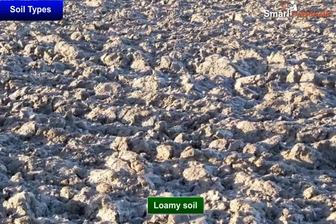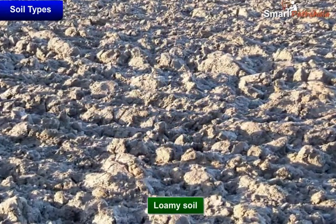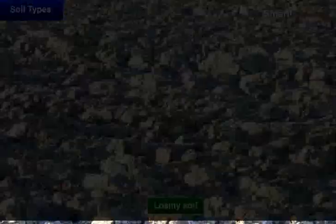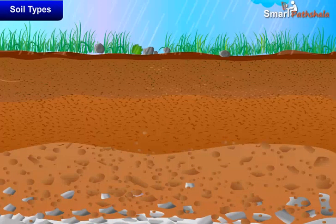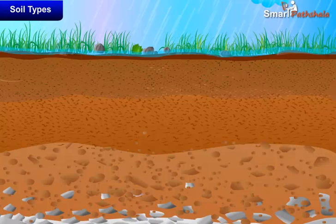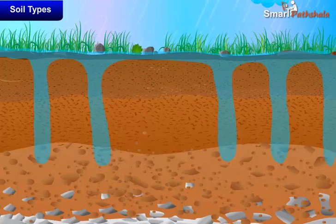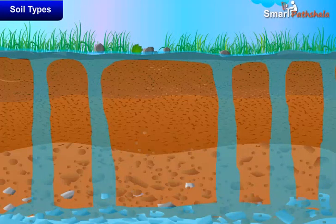The sizes of the particles in the soil have a very important influence on its properties. Sand particles are quite large. They cannot fit closely together, so there are large spaces between them. These spaces are filled with air and the sand is well aerated. Water can drain quickly through the spaces between the sand particles. So, sandy soils tend to be light, well aerated, and dry.